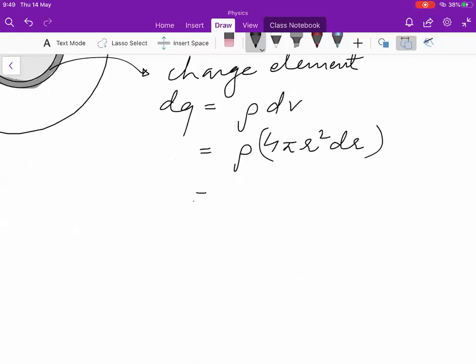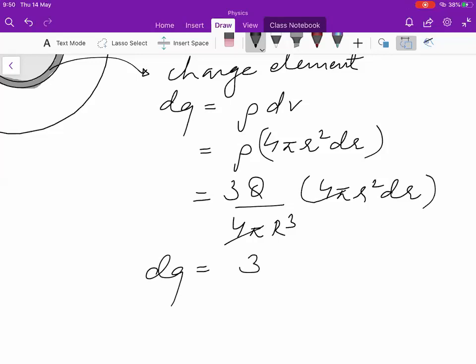So now your dq is Q divided by 4/3·π·R³ times 4πr²·dr. This 4π cancels out.